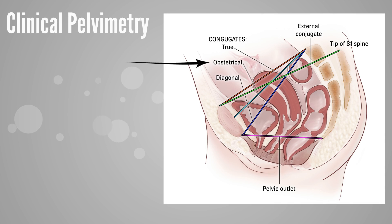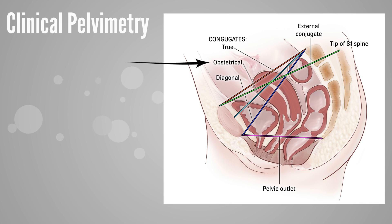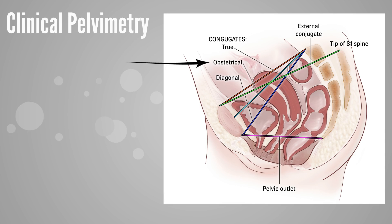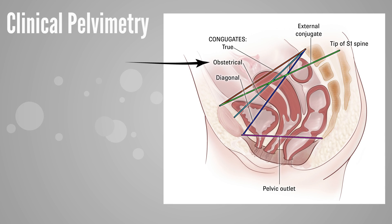Clinical pelvimetry helps assess the adequacy of the maternal pelvis and can help determine if there is space for the fetus. The obstetric conjugate is the narrowest fixed distance through which the fetal head must pass vaginally, and it cannot be measured clinically due to the presence of the bladder. The diagonal conjugate is the distance between the lower portion of the pelvis and the sacrum anteriorly. The obstetric conjugate is usually 1.5 to 2 centimeters shorter than the diagonal conjugate and should be at least 11 centimeters to ensure delivery of the fetal head.